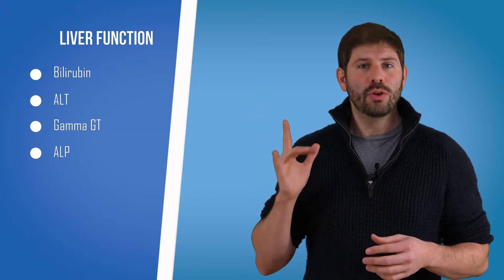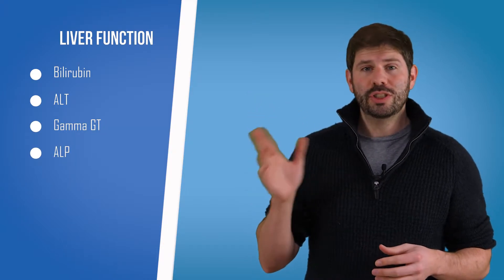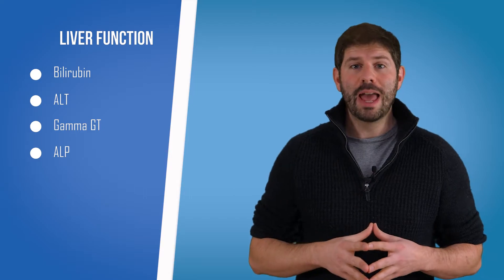When we do your liver function tests, we're looking at your bilirubin, your ALT, your gamma GT, and your ALP.